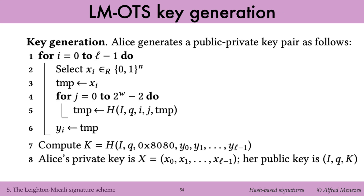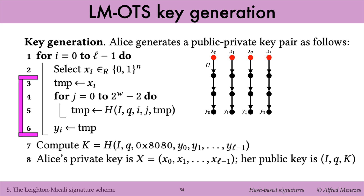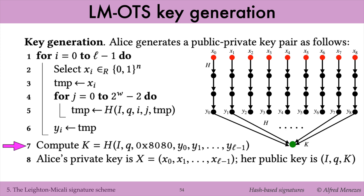Here is a full description of the Leighton-Macaulay one-time signature scheme, beginning with key generation. Alice selects L random n-bit strings X_i. For each X_i, she computes the hash chain of length 2 to the W minus 1, starting at X_i and ending at Y_i. She computes the hash K of the Y_i values. Alice's private key is the list of the X_i's, while her public key is K.